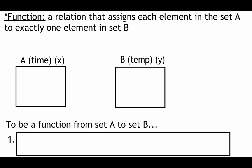The textbook definition says a function is a relation that assigns each element in set A — which we'll call our x values — to exactly one element in set B, which will be our y values. So we go from some x input to exactly one y output.